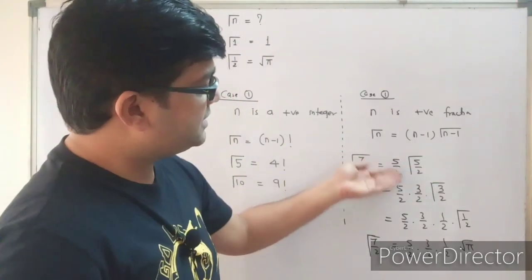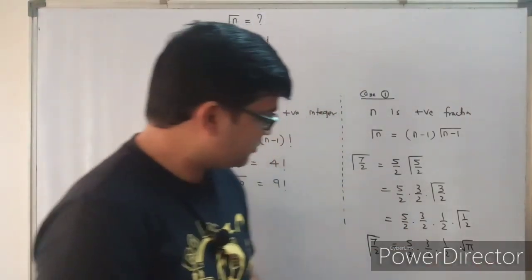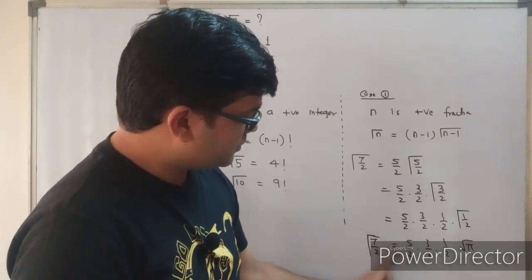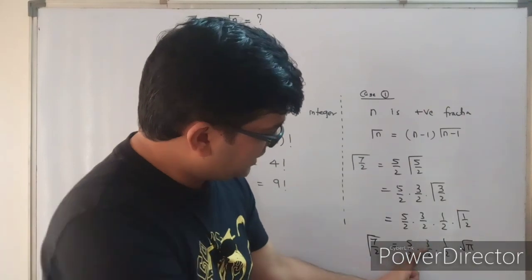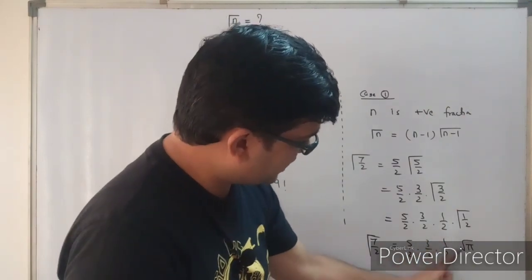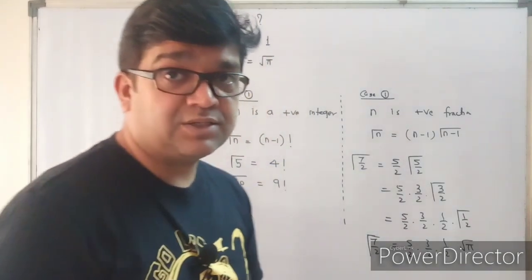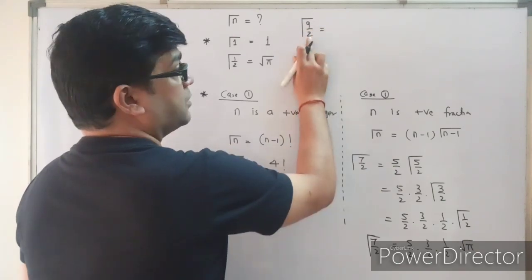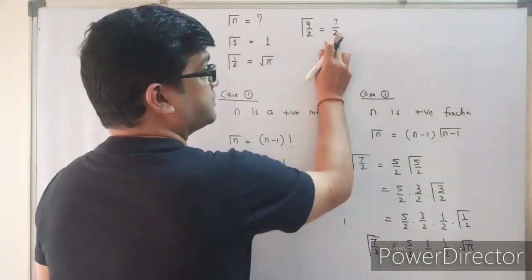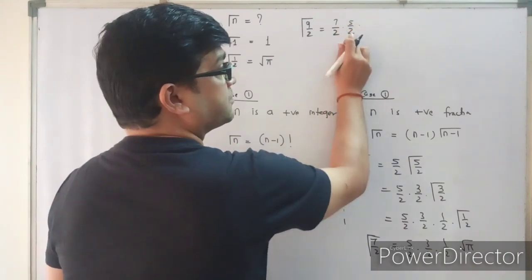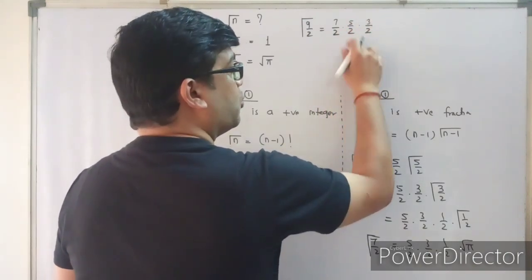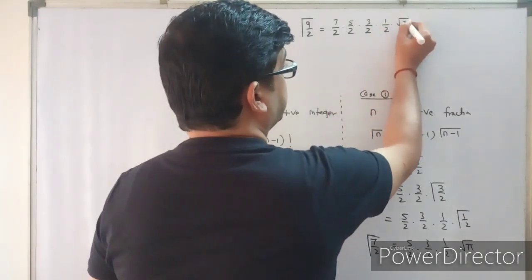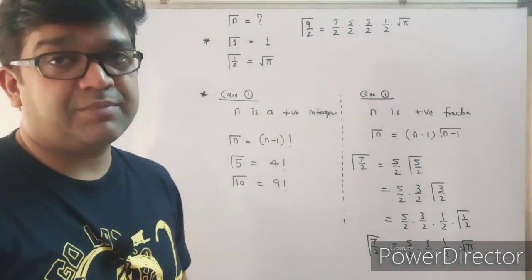You can write this in a single step: for Γ(7/2), go from 7/2 → 5/2 → 3/2 → 1/2, then write √π. Similarly, Γ(9/2): go 9/2 → 7/2 → 5/2 → 3/2 → 1/2, then write √π, giving the value of Γ(9/2).